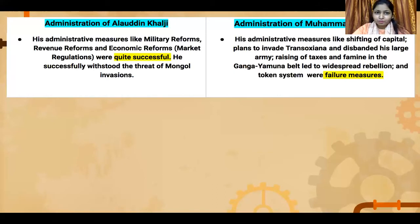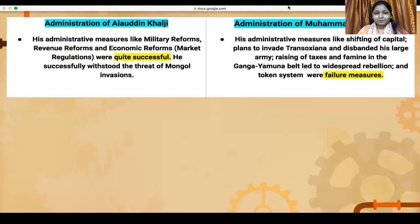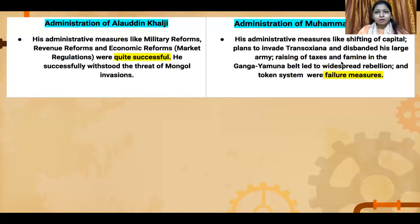To summarize, Alauddin Khalji's policies were much more practical and effective compared to Muhammad bin Tughlaq's policies. That's all for today's video. I hope you've understood the entire topic. If you have any confusion, please write in the comment section. Thank you so much.